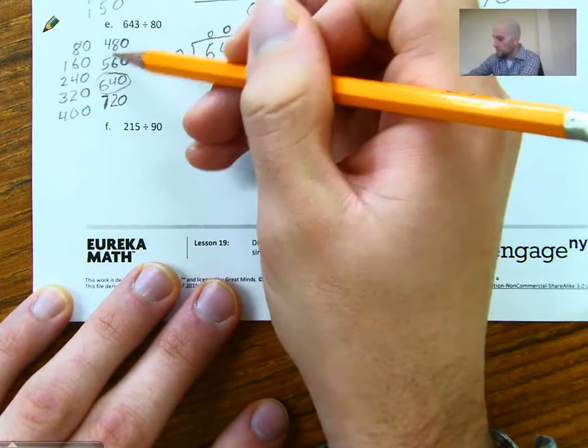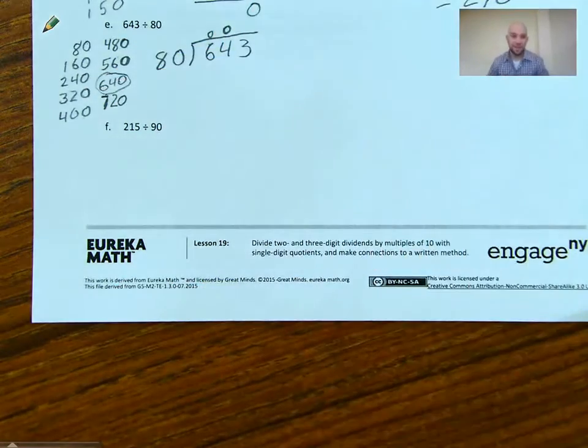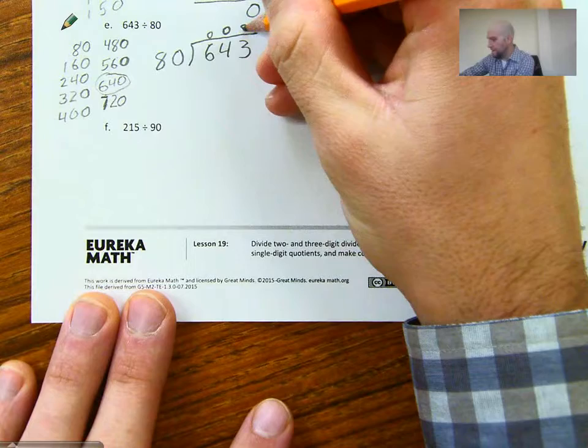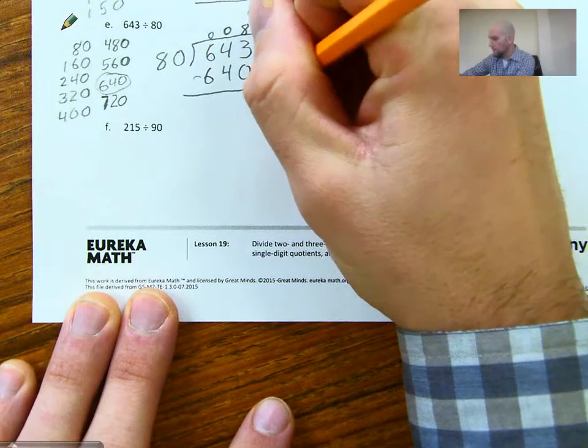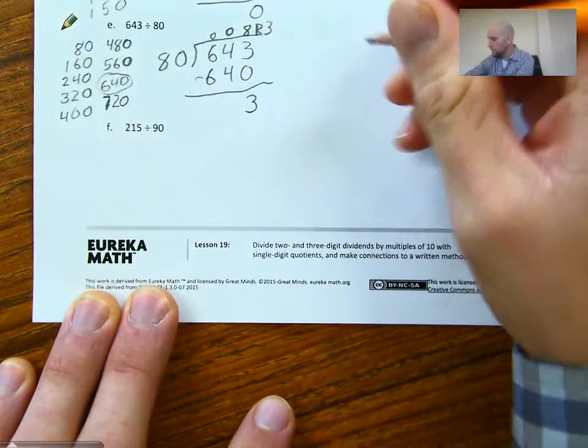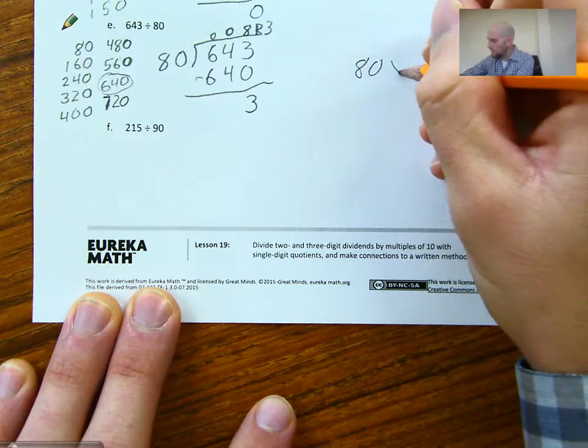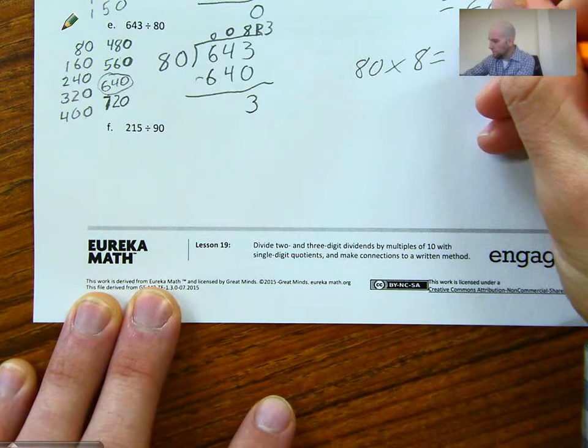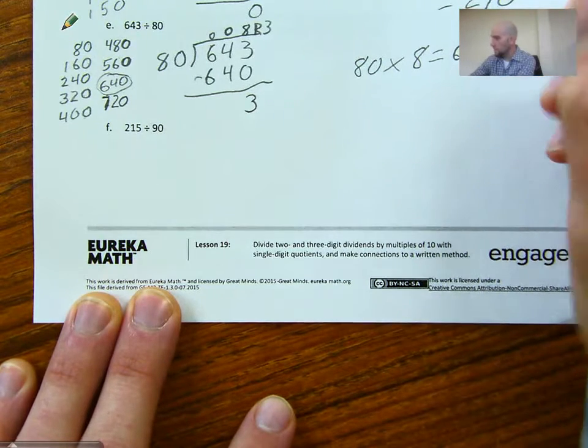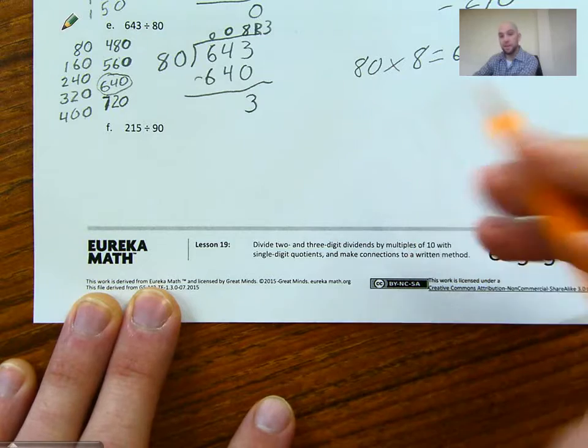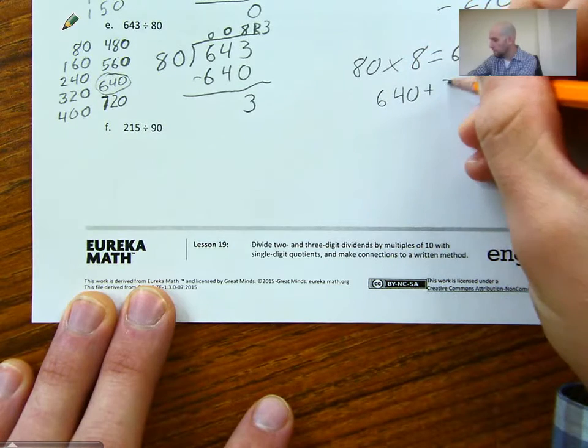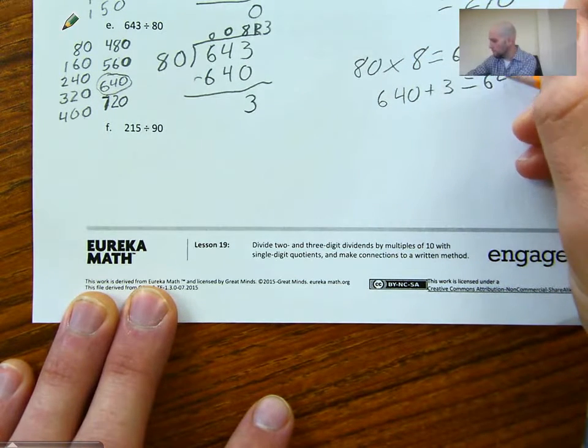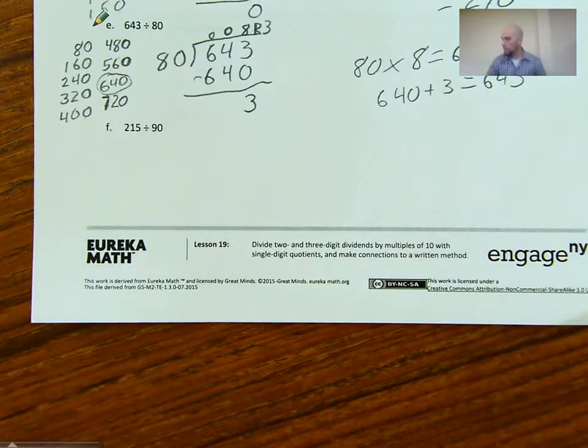I need to count how many that is. 1, 2, 3, 4, 5, 6, 7, 8. And that should make sense, because 8 times 8 is 64. 8 times 80 is 640. So we're going to put an 8 here. And we need to subtract 640. We're just going to get 3. So we get a remainder of 3. 80 times 8 equals 640. Again, 8 times 8 is 64 times 10 is 640. And then 640 plus 3 equals 643.